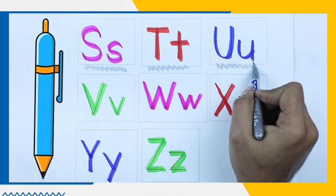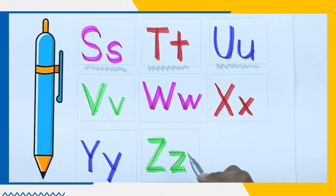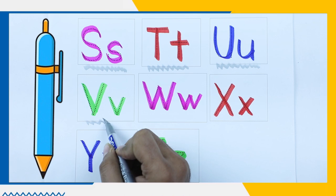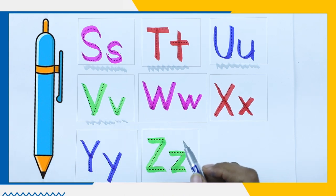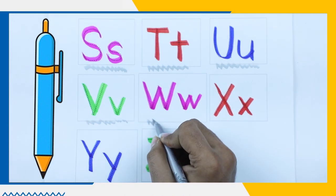Blue color. U, U for umbrella. Green color. V, V for van. Pink color.